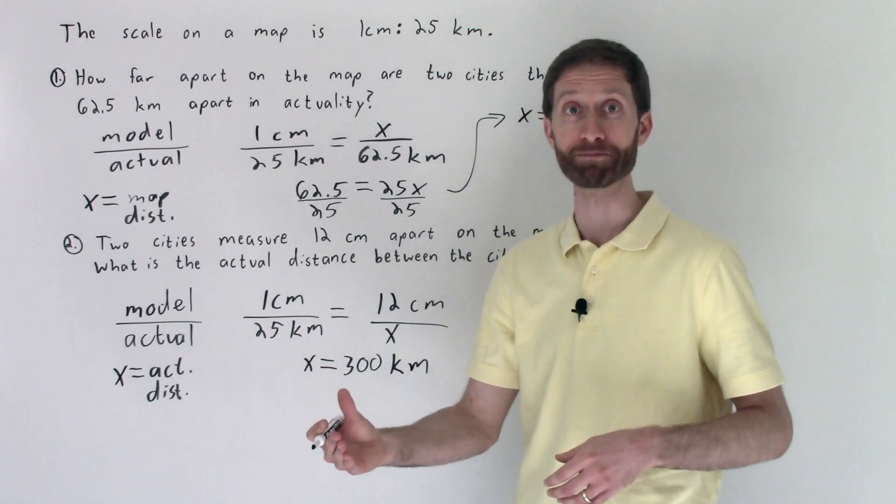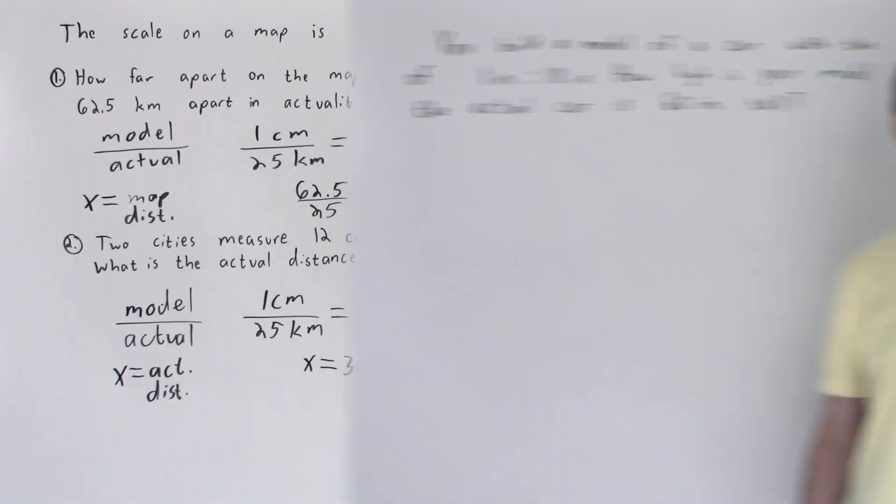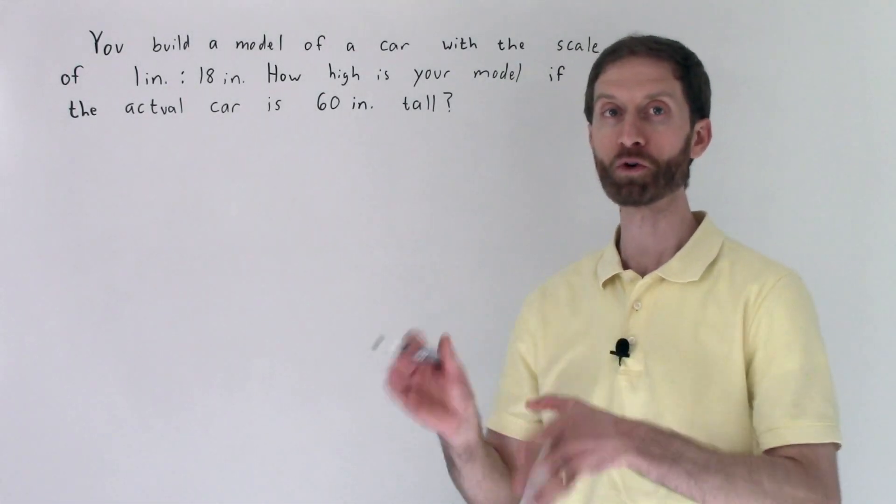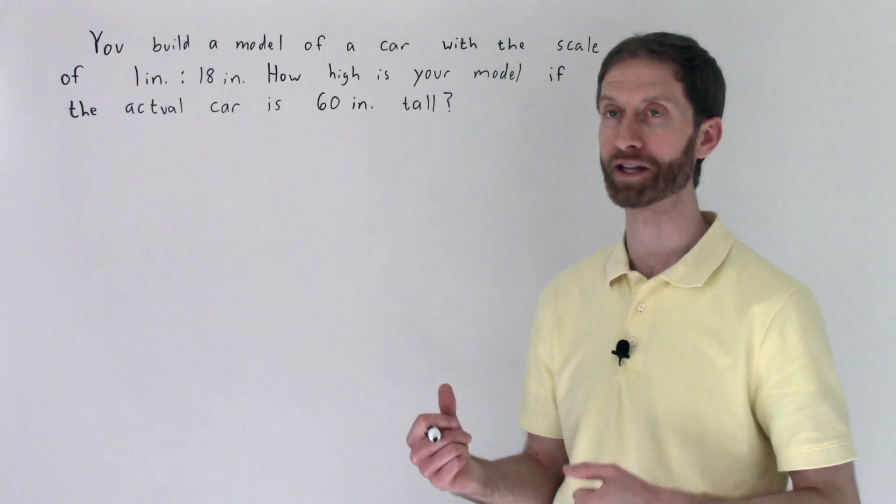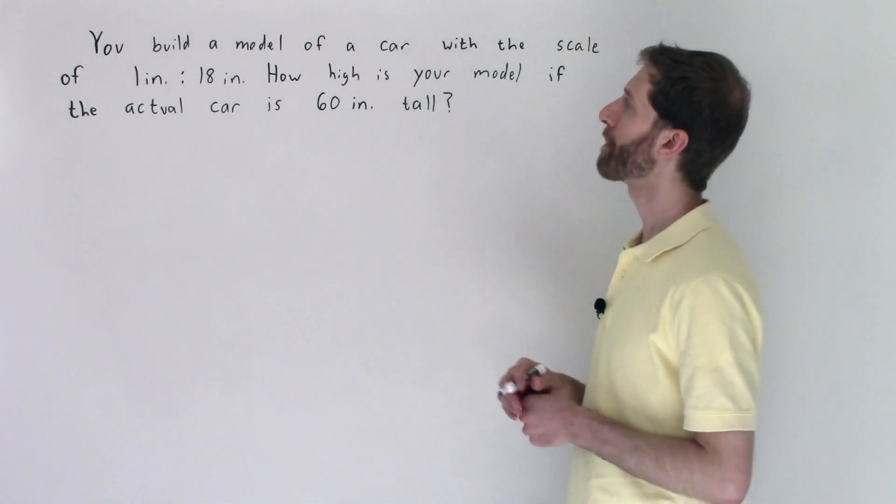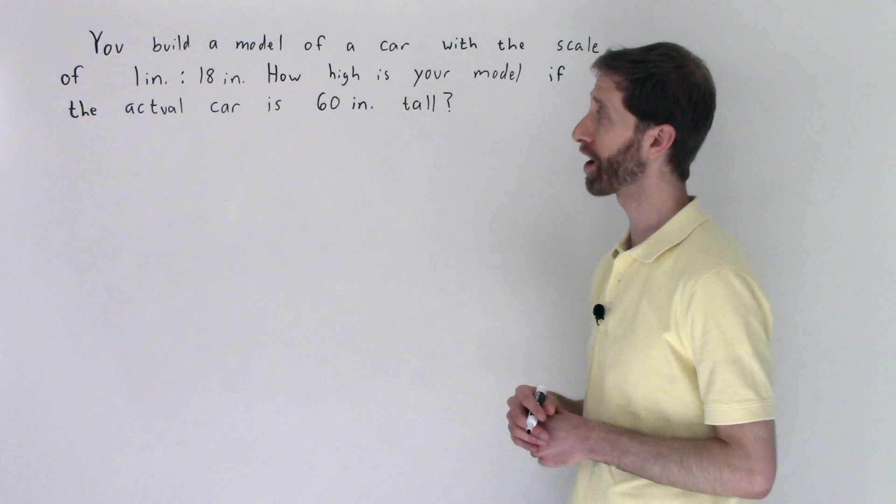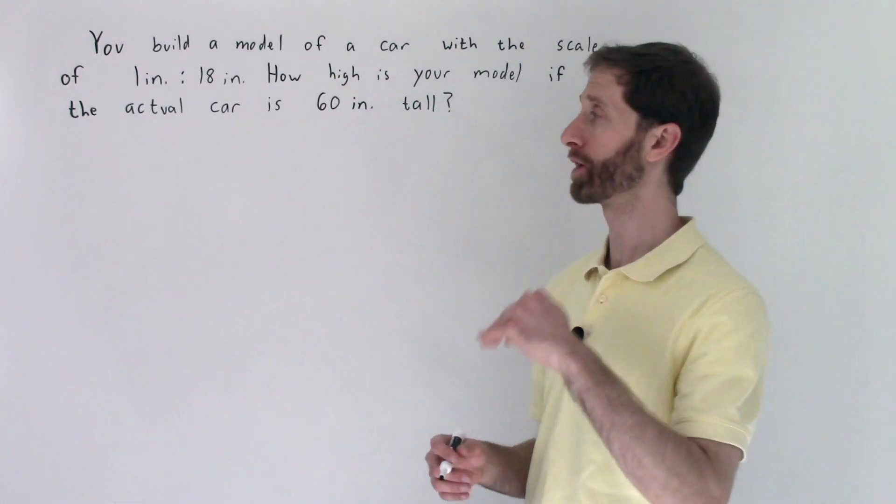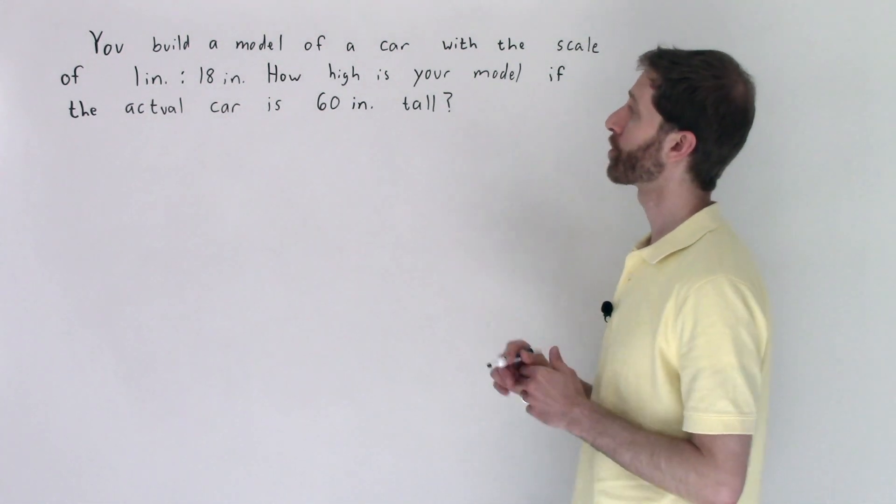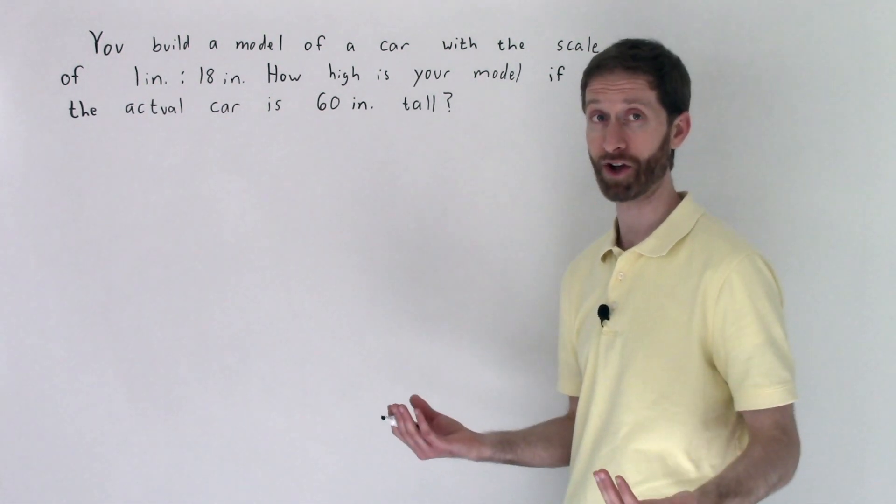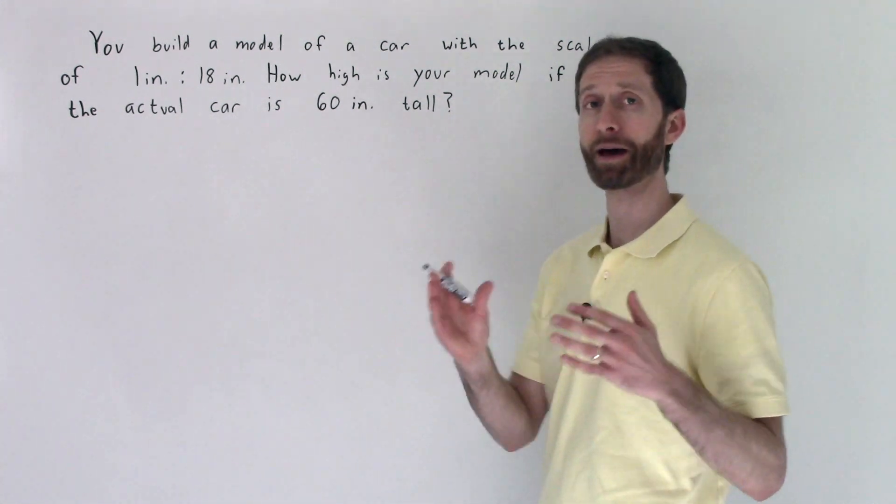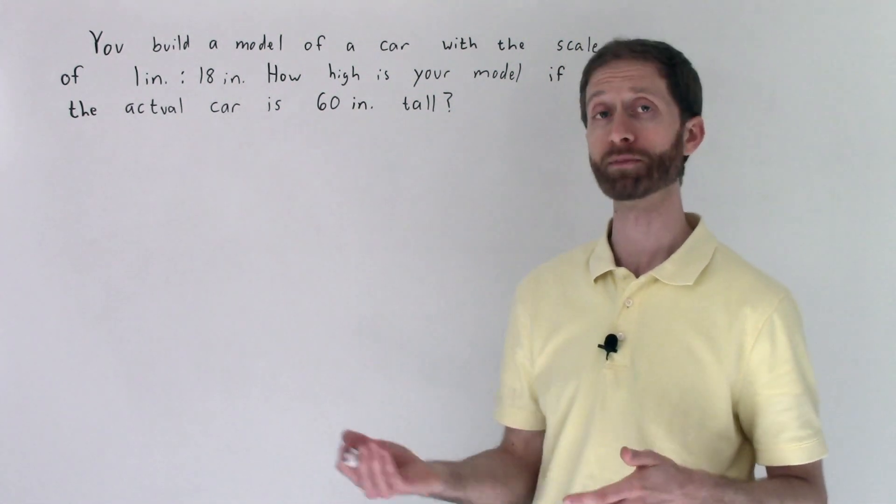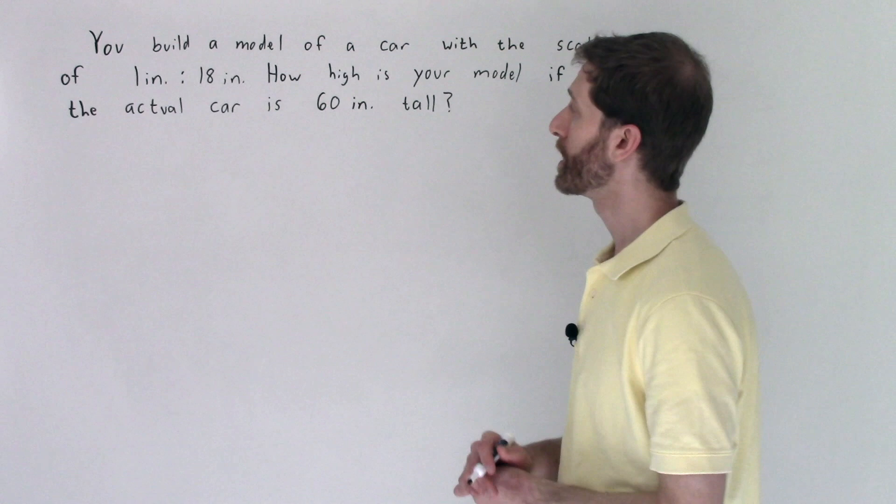Stay tuned on the next clip, we're going to go over another word problem. Sweet, and here we have another scale word problem. Let's dig right into it. It says you build a model of a car with the scale of one inch compared to 18 inches, or one inch for every 18 inches. How high is your model if the actual car is 60 inches tall?